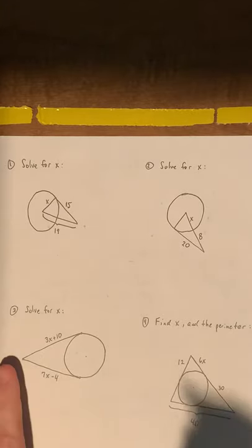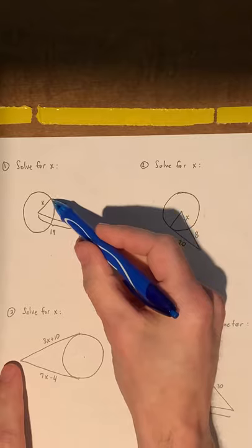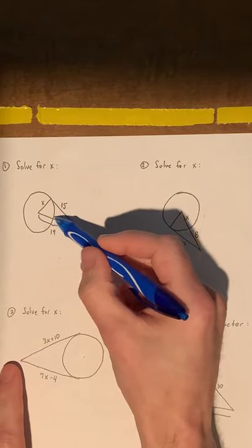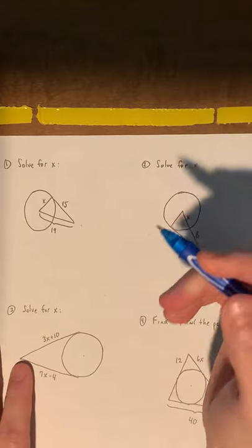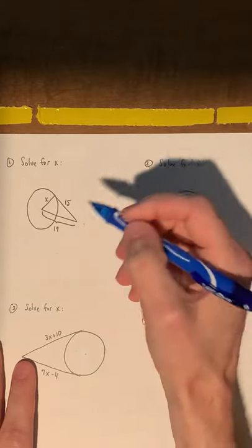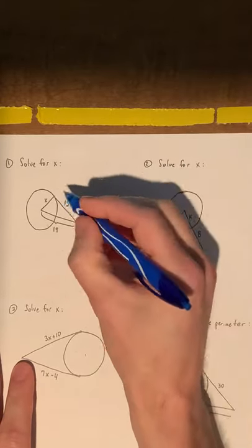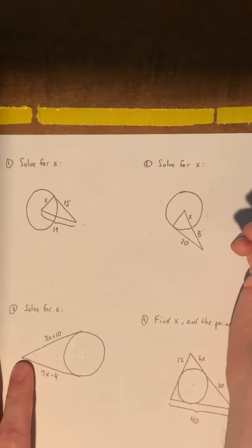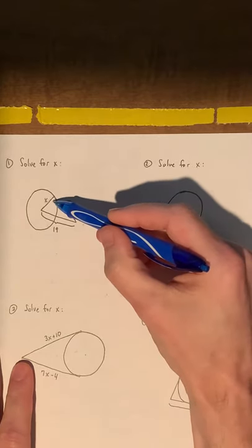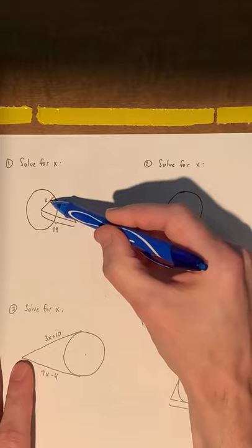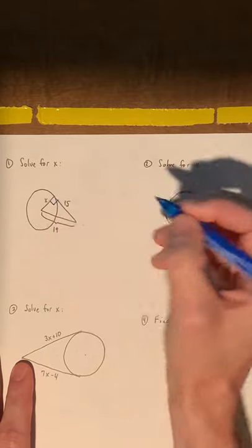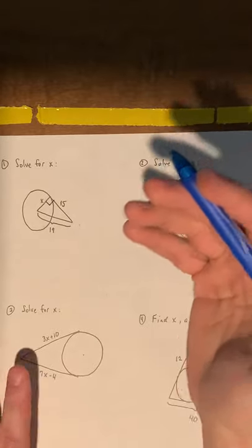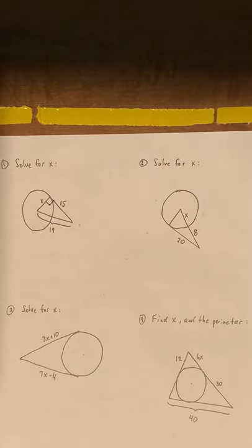All right. Number one, we're going to solve for x. We're given the tangent segment 15. This side is 19. And we want to get x, which is the radius of the triangle. Well, like I mentioned earlier, they're not going to tell you it's 90. They're going to want you to remember that it's 90, that it's perpendicular. So we have a right triangle. We can simply use Pythagorean theorem now.